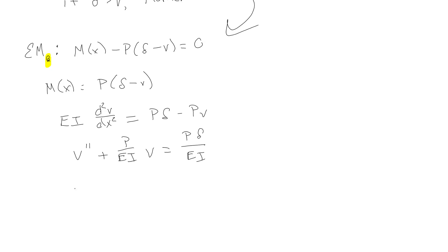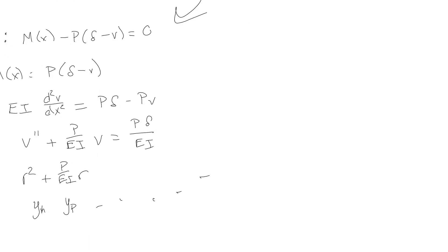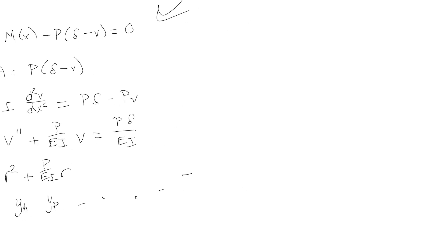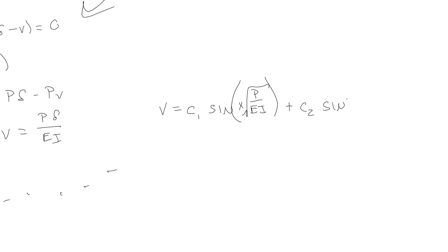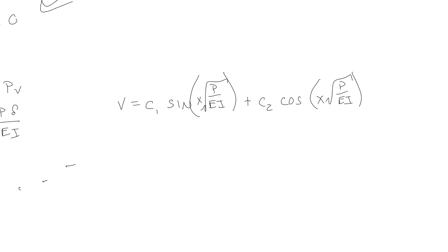We solve using r² + P/EI = 0 to get our homogeneous solution, then find our particular solution and add them together. That gives us displacement v = C₁ sin(√(P/EI)·x) + C₂ cos(√(P/EI)·x) plus our particular solution delta at the end.